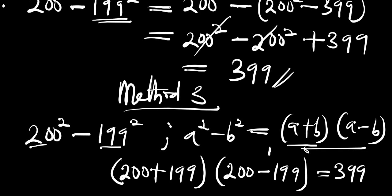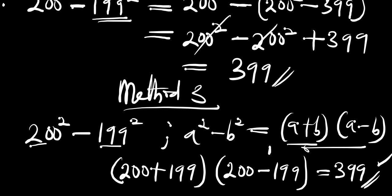This gives us 399 times 1, which equals 399. That also corresponds to what we had before. Any of these three methods is valid, so go ahead and use whichever one you are most comfortable with. That's it for this video — thank you and goodbye.